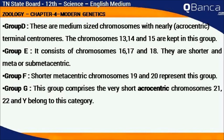Group E consists of chromosomes 16, 17 and 18. They are shorter and meta- or sub-metacentric. Group F comprises the shorter metacentric chromosomes 19 and 20.